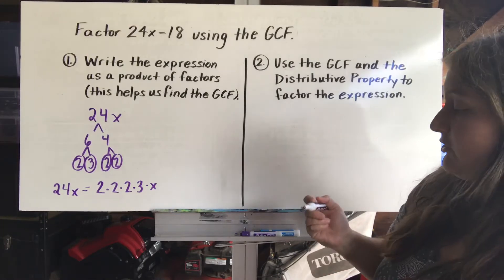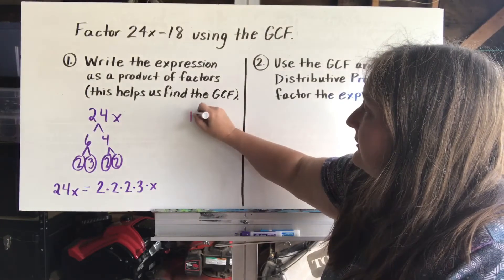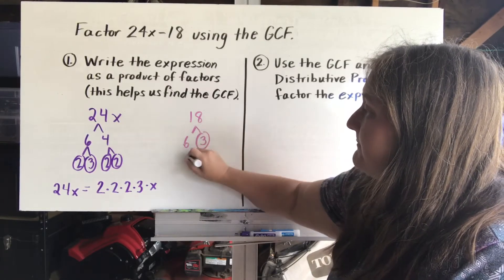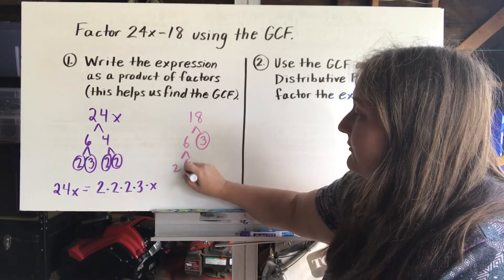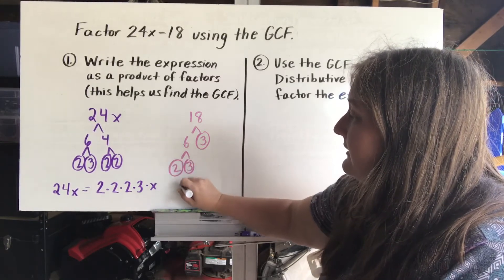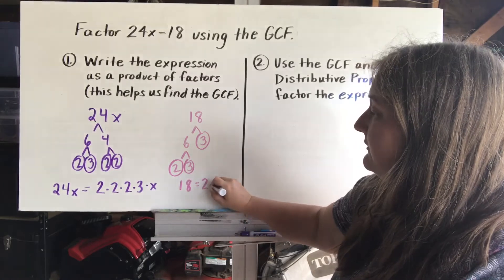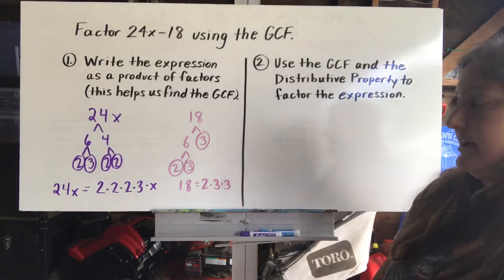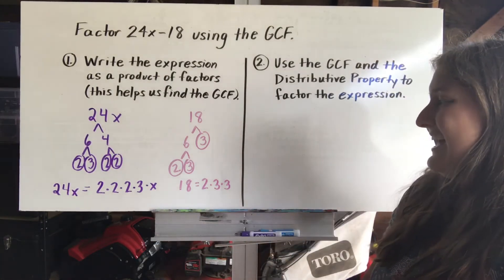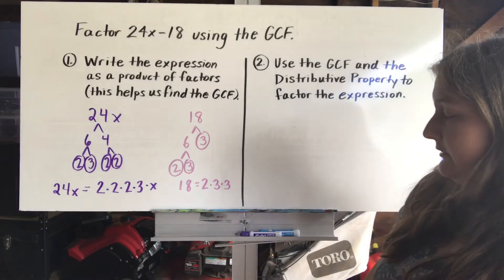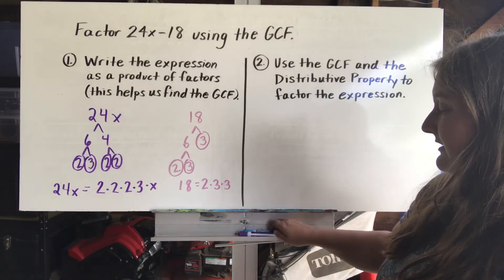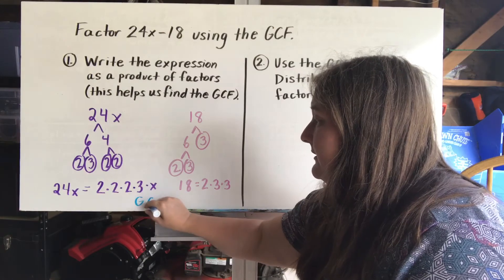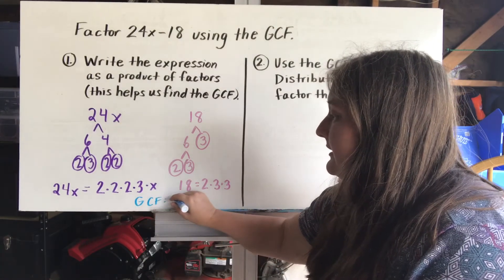Now I'm going to do the same thing with my second term, 18. 18 can be broken into 6 and 3. 3 is a prime, and 6 can be broken into 2 and 3. So 18 can be rewritten as 2 times 3 times 3. Both terms have a 2 and a 3 in common, so 2 times 3 gives us 6, making our GCF equal to 6.